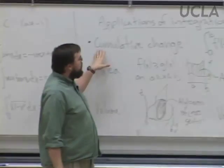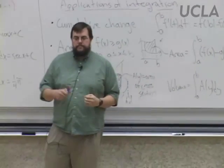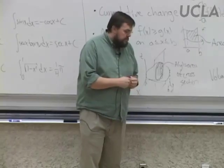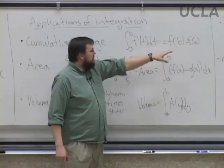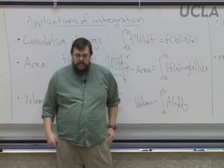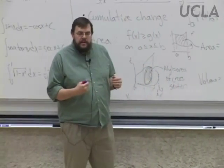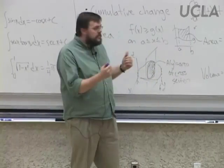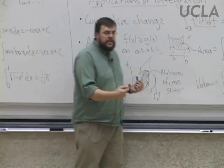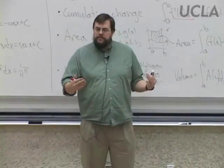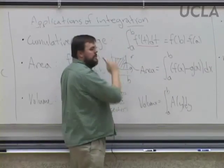One application is cumulative change. Suppose I know how the function f is changing — I know the rate at which f is changing, in other words I know f prime. And I want to say, how much did f change from a to b? I just integrate from a to b: f prime of t dt, and by the fundamental theorem of calculus that's f(b) minus f(a). The way to always think about any integration problem: cut it up into little tiny pieces, understand the little tiny pieces, and then add them up. So f prime(t) dt is the change you make at time t — then you just add it up.